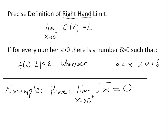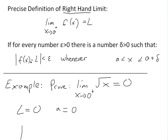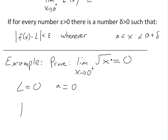In this case, L is equal to zero and a is equal to zero. We need to find a number delta for any given epsilon — we have to find this delta in terms of epsilon, just like in my earlier videos on proving limits.